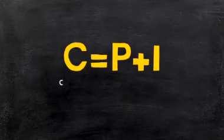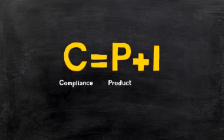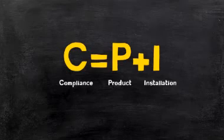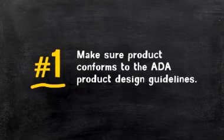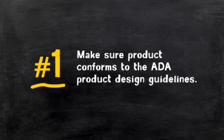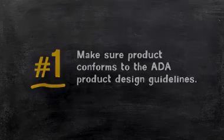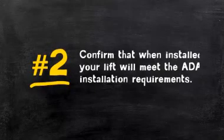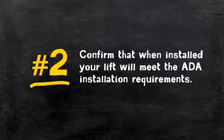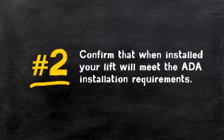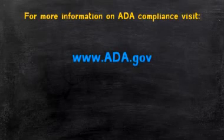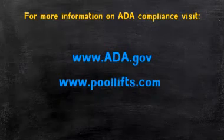To sum up, ADA compliance is a function of a conforming product design that is installed in accordance with the ADA installation requirements. To ensure that your lift meets all ADA requirements: number one, make sure your product of choice conforms to the ADA product design guidelines — pool lift manufacturers should be able to produce independent testing results that verify conformance. Number two, confirm with your installation provider that when installed, your lift will meet the ADA installation requirements. For more information on ADA compliance, visit www.ada.gov or www.poollifts.com.